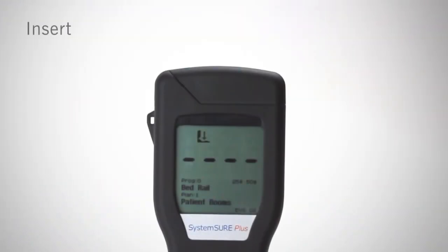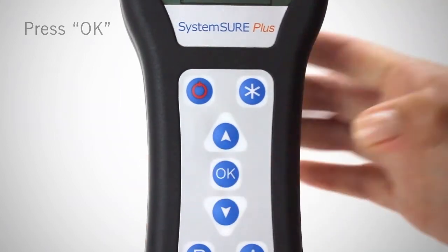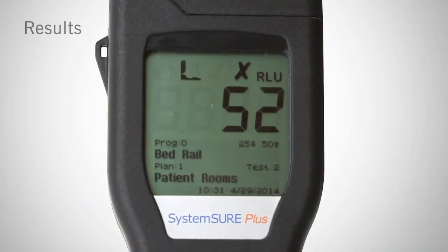The final step is measurement. Insert the swab into the reed chamber within 15 seconds after activation. Then close the lid. Hold the luminometer upright and press OK to initiate measurement. Results will be displayed in 15 seconds.